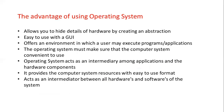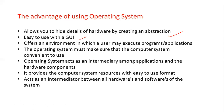Now, the advantages of using an operating system: it allows you to hide details of hardware by creating an abstraction. As a user, you don't know what type of hardware is there — you simply work as you want. The operating system hides all those hardware details and provides the environment for you to work. It also offers a graphical user interface and an environment where a user may execute programs and applications. The OS must make sure that the computer system is convenient to use.